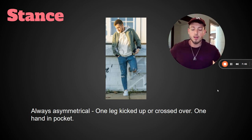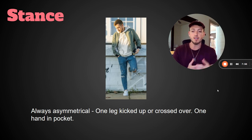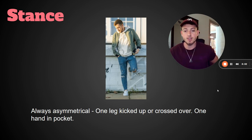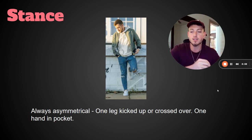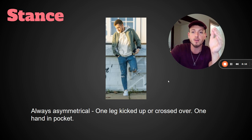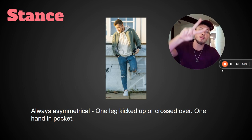Another thing about your stance: a lot of guys stand squared off to the camera like they're at attention in the military. You've got to create some asymmetry — kick one leg up, maybe cross one leg over the other, put a hand in your pocket. When you start making things asymmetrical, it makes you look more natural. And stop looking directly at the camera — I promise this will make your pictures look 90 percent better instantly. Hope this was helpful, I wanted to keep it short. See you guys on the next one.